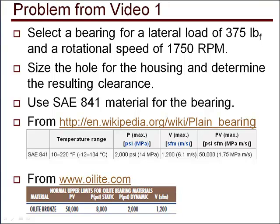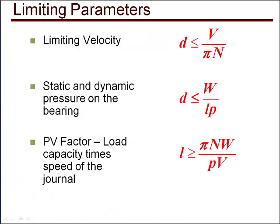In that video, we selected a bearing for a load of 375 pounds-force and a rotational speed of 1750 RPM. The bearing chosen was a 2.5 inch ID by 3 inch OD, and we used two of those bearings that were 3 inches long. Here are the design inequalities that were used to select the bearing. The limiting velocity and pressure gave us the range of ID for the bearing, and the PV factor gave us the length that had to be exceeded.